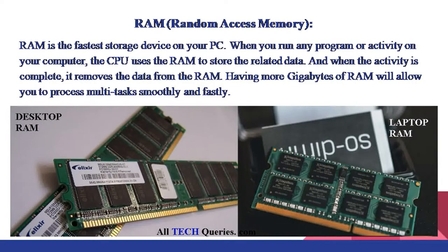RAM is the fastest storage device on your PC. When you run any program or activity on your computer, the CPU uses the RAM to store the related data. And when the activity is complete, it removes the data from the RAM.